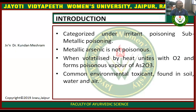Arsenic is categorized under the irritant pattern or sub-metallic poisoning. Metallic arsenic is not poisonous; when volatilized by heat it unites with oxygen to form the poisonous compound As2O3. It is a common environmental toxicant found in soil, water, and air.